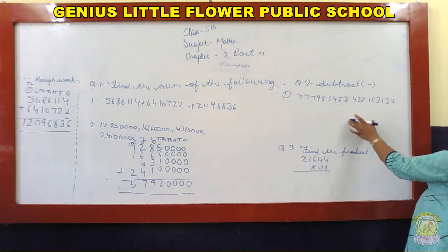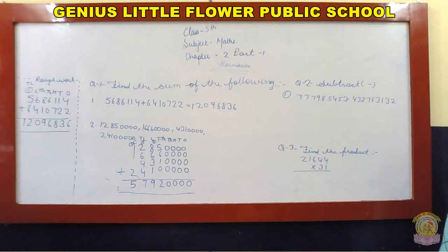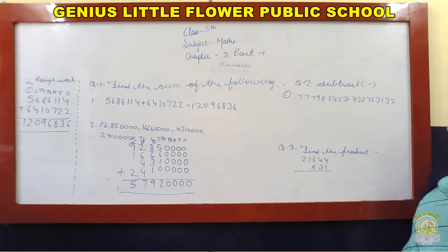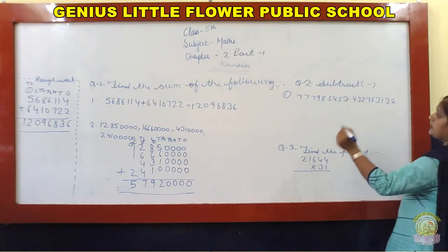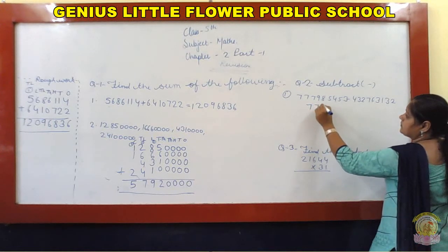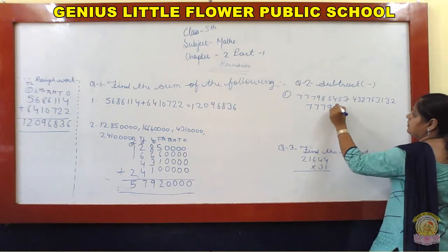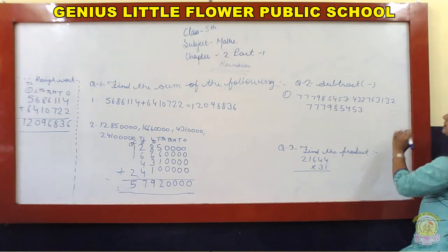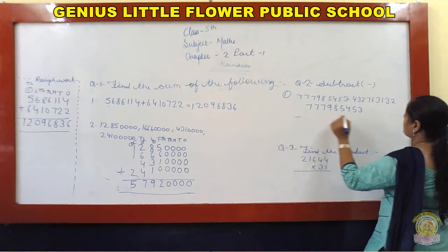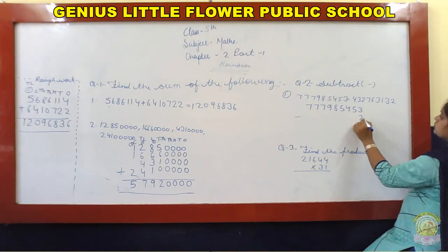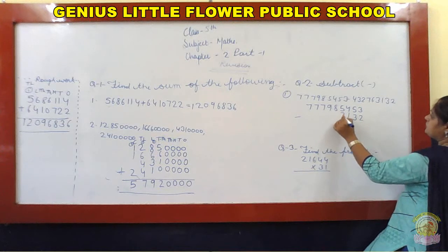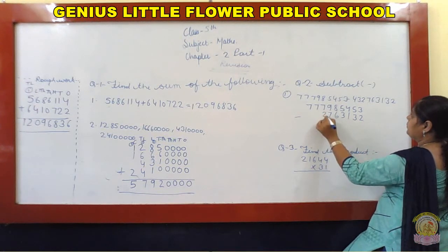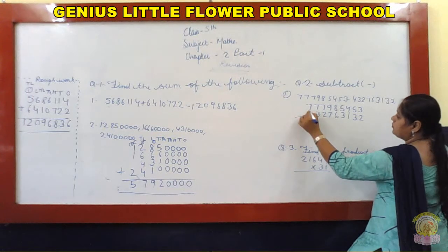Next chaliye, question number second per. Second bhi humne kya karna hai? Subtraction karna hai, it means minus karna hai. Likhiye: 5, 4, 5, 3 minus 5, 4, 5, 3 minus 2, 3, 1, 3, 6, 7, 2, 3, 4.